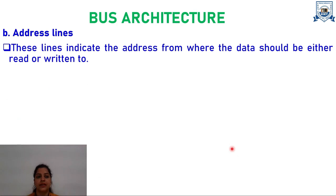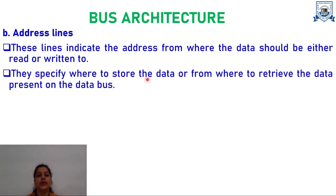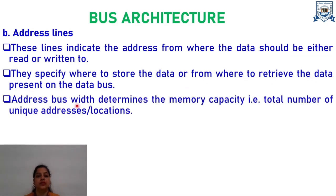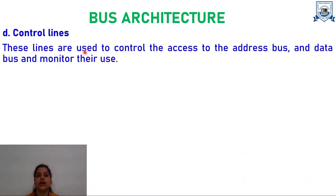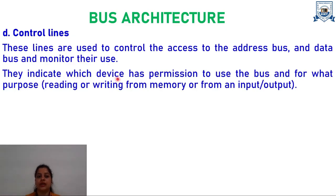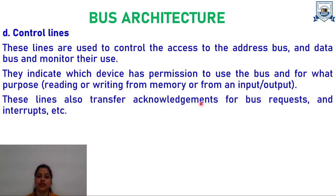Next are the address lines. Address lines indicate the address from where data should be either read or written to. They specify where to store the data and from where to retrieve the data present on the data bus. The width of the address bus determines the memory capacity, i.e., the total number of unique addresses or locations. Power lines are used to provide the electrical power supply necessary within the computer system. Control lines are used to control access to the address bus and data bus and to monitor their use. They also indicate which device has permission to use the bus and for what purpose — reading or writing from memory or from I/O devices — and are responsible for transferring acknowledgements generated in response to bus requests and interrupts.